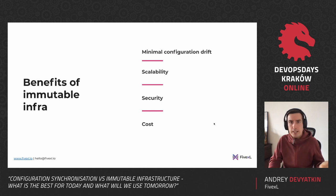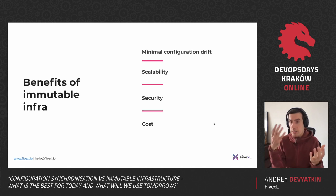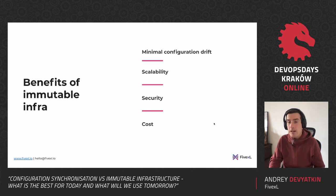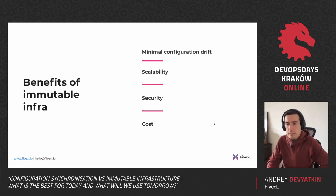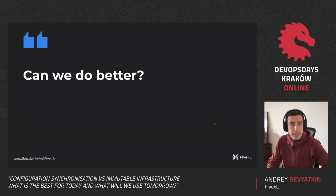The benefits of immutable infrastructure: you have minimal configuration drift, it's highly scalable, and it's great for security since it's really hard to get any changes in. When you have a security incident, you can compare the image with what you've got — any changes were most probably made by an intruder. When it comes to cost, you can use primitives like spot instances since your system is ready to be shut down and recreated, so you can easily use EC2 spots and save a lot of money.